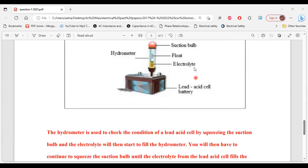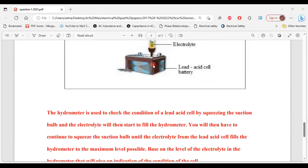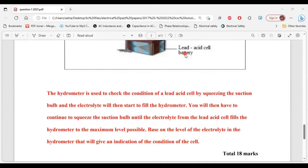Now let's look at the explanation. The hydrometer is used to check the condition of the lead acid cell by squeezing the suction bulb, which is this part here. After squeezing the suction bulb, the electrolyte will then start to fill the hydrometer. If you look at the diagram here, you can see the electrolyte in it. You will have to continue to squeeze the suction bulb until the electrolyte from the lead acid cell fills the hydrometer to the maximum level possible. Based on the level of the electrolyte in the hydrometer, that will give an indication of the condition of the cell.